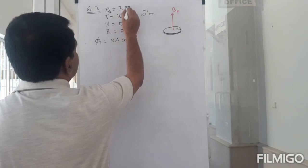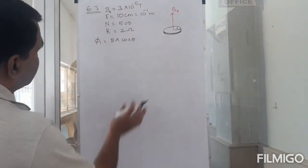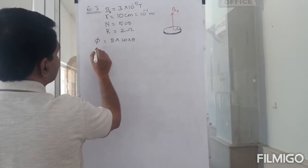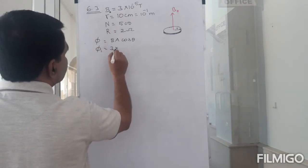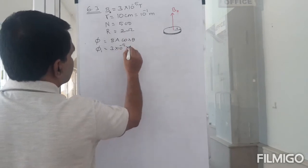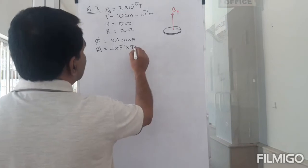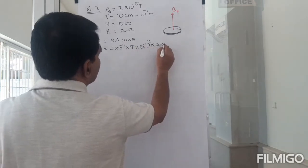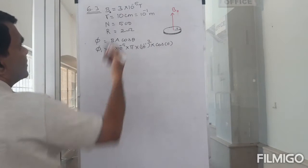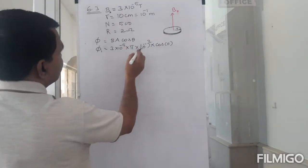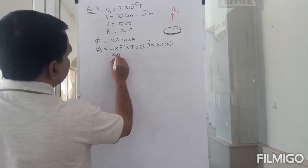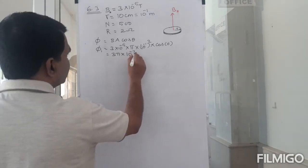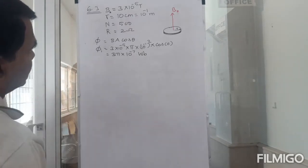The initial flux is Φ_initial = B · A · cos θ. B = 3 × 10⁻⁵ tesla, area = π × (10⁻¹)² = π × 10⁻² m², and cos 0° = 1. So Φ_initial = 3 × 10⁻⁵ × π × 10⁻² = 3π × 10⁻⁷ weber.